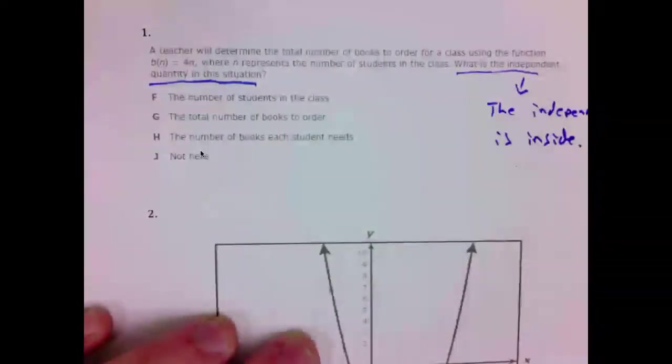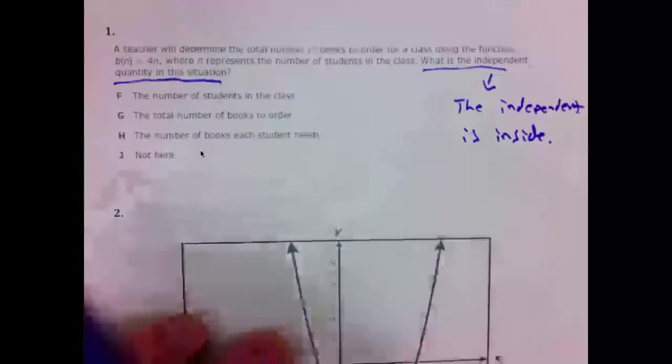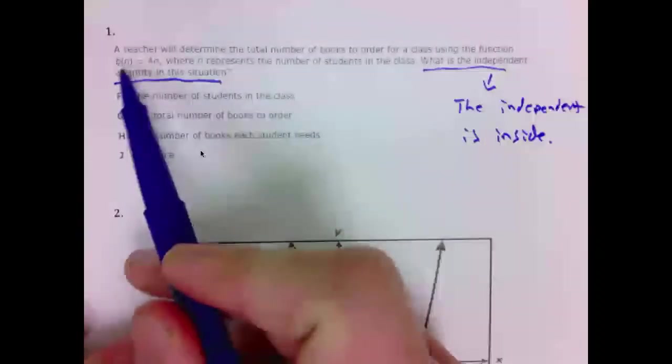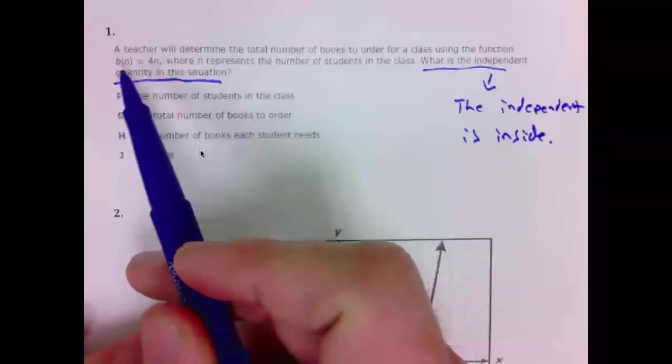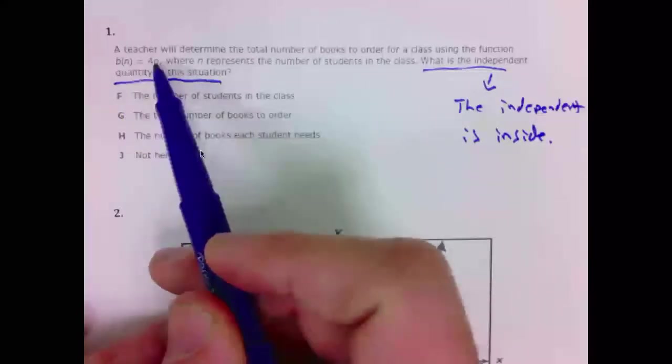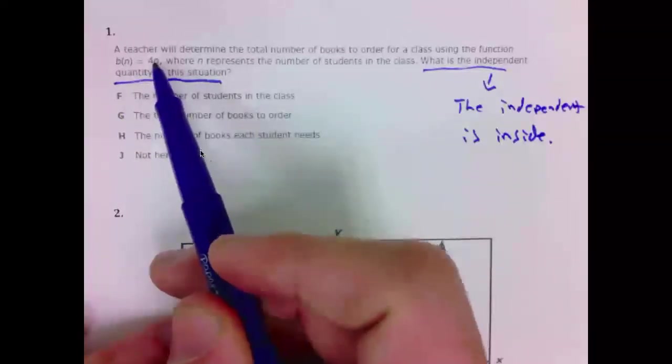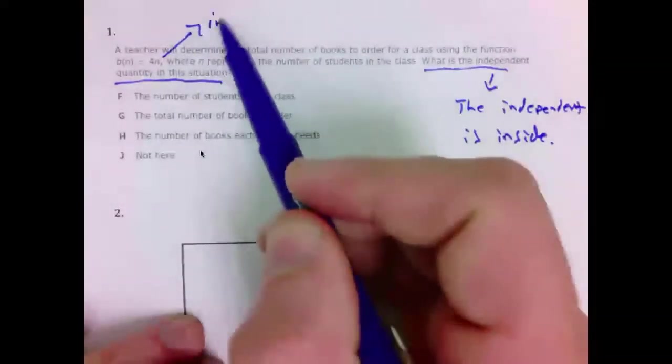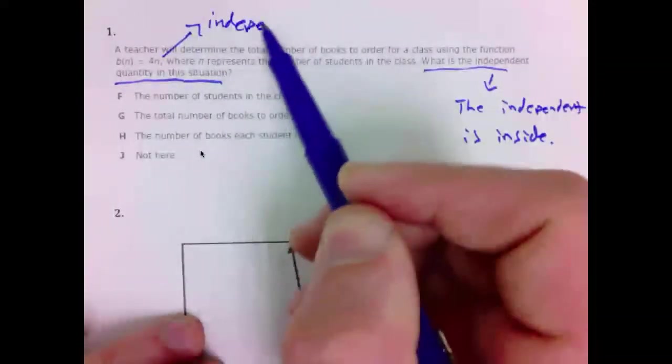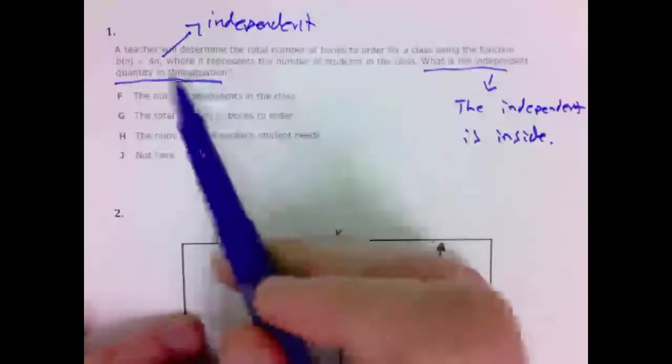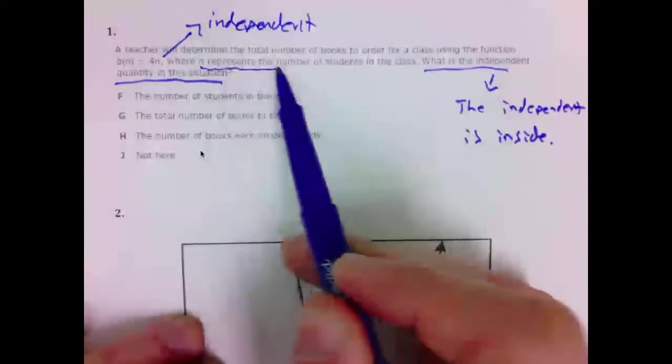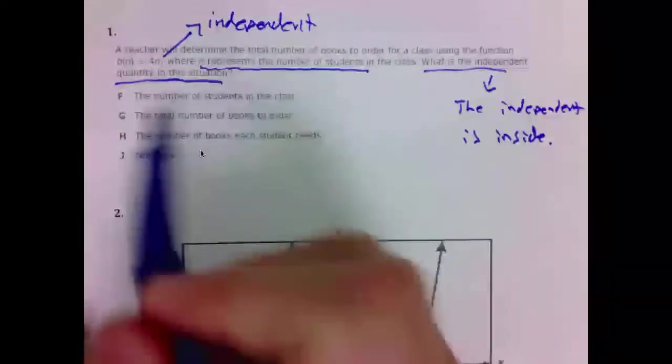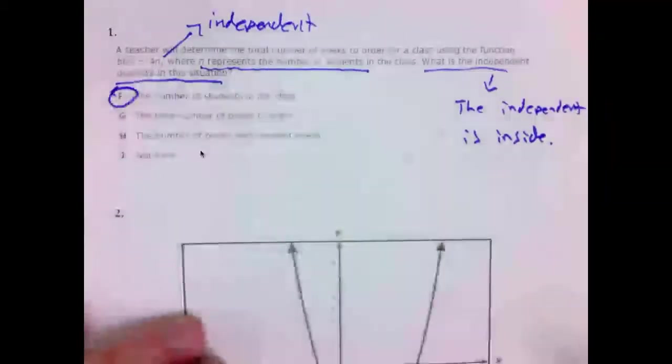Okay, if not that, remember that independent is the X. In this situation, you know this B of N, that's the Y, that's the output quantity. Our independent quantity is N here. N is independent. And N represents the number of students. Number one is F.